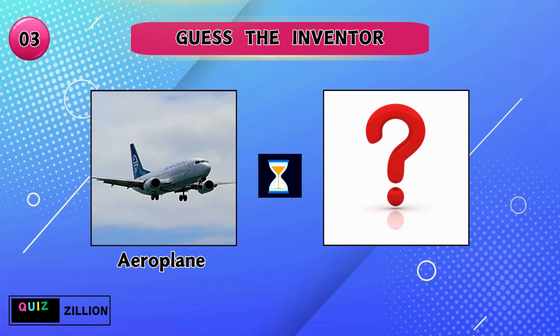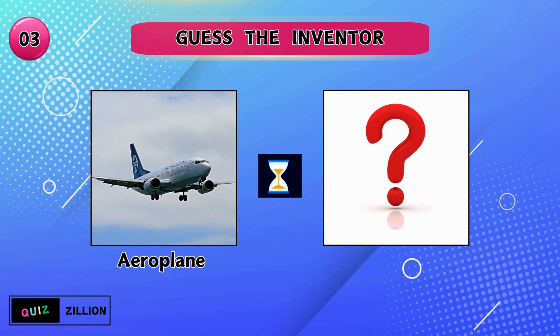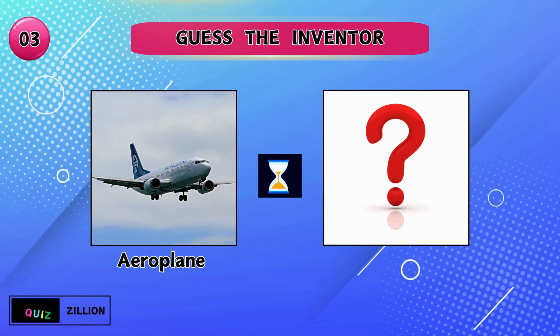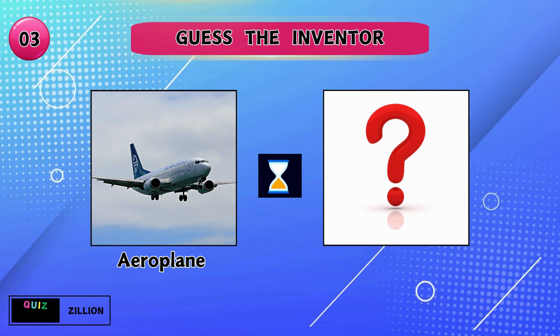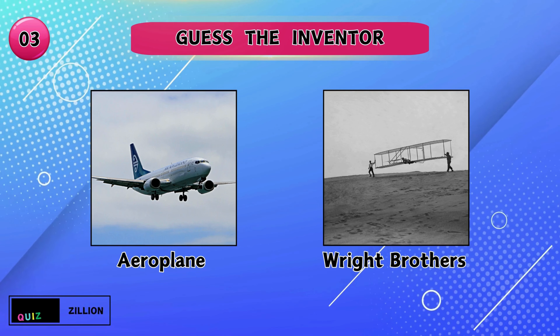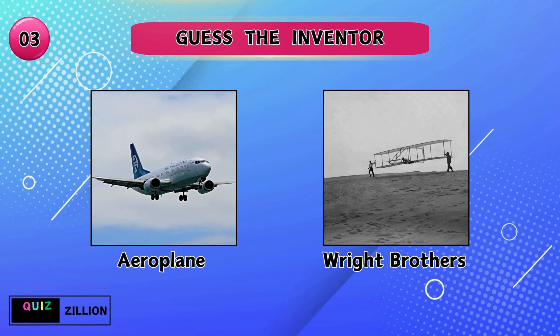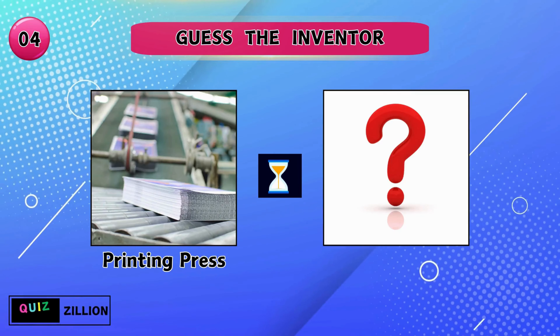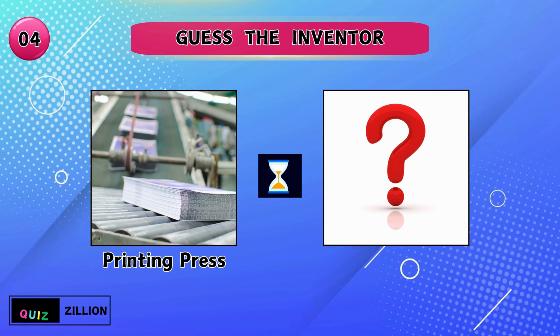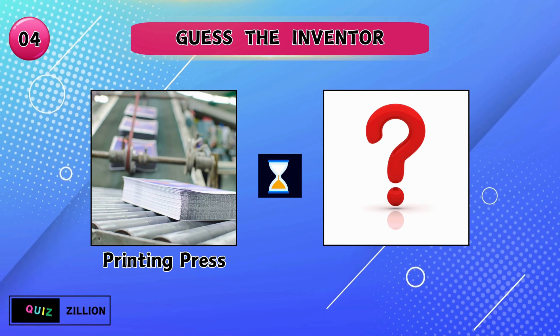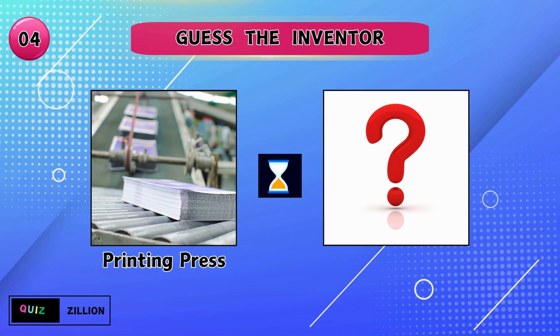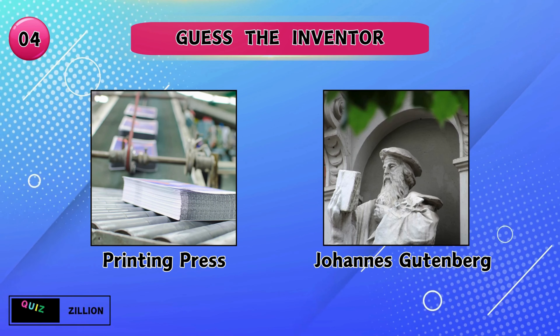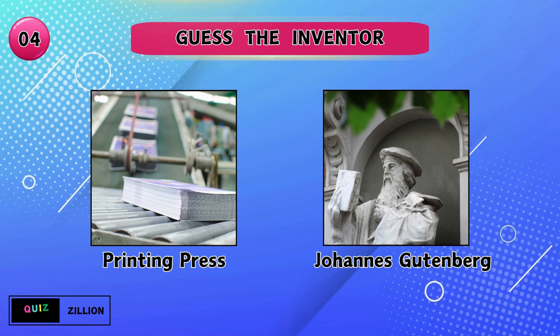Can you identify who created the airplane? The Wright Brothers discovered the airplane. Who made the printing press? The printing press was found by Johannes Gutenberg.